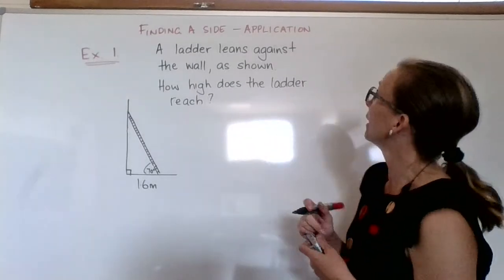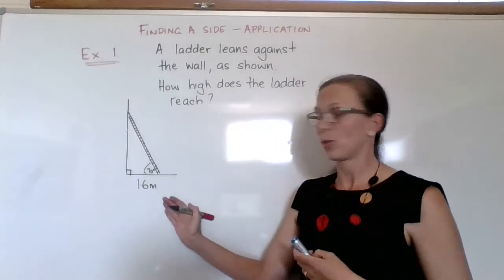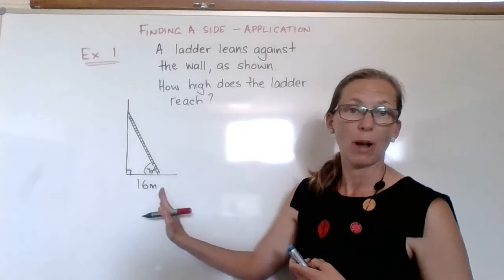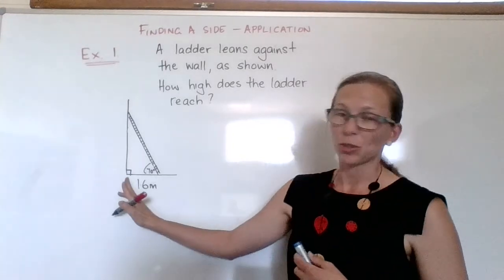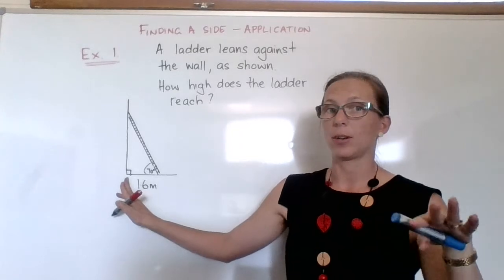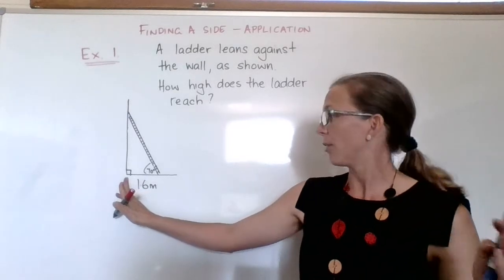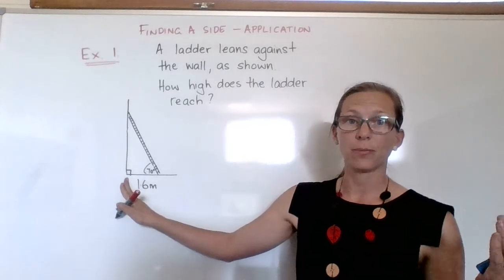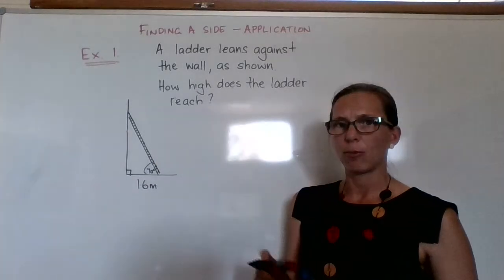So we've got a ladder leaning against the wall as shown. We've got 1.6 meters between the corner of the wall and the ladder. We always assume that walls and ground are 90 degrees. If it doesn't have the 90 degree sign in, we make that assumption. The question is, how high does the ladder reach?